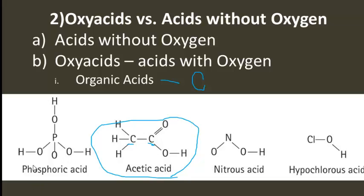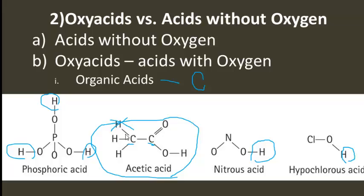Notice phosphoric acid has three acidic hydrogens, and each one of those is attached to an oxygen. The same thing is true for nitrous acid — it's got a hydrogen attached to the oxygen — and the same thing is true for hypochlorous acid. Now in acetic acid, there's only one acidic hydrogen, because the three that are attached to the carbon are not lost as protons. So the only hydrogen that makes acetic acid an acid is the one attached to the oxygen.